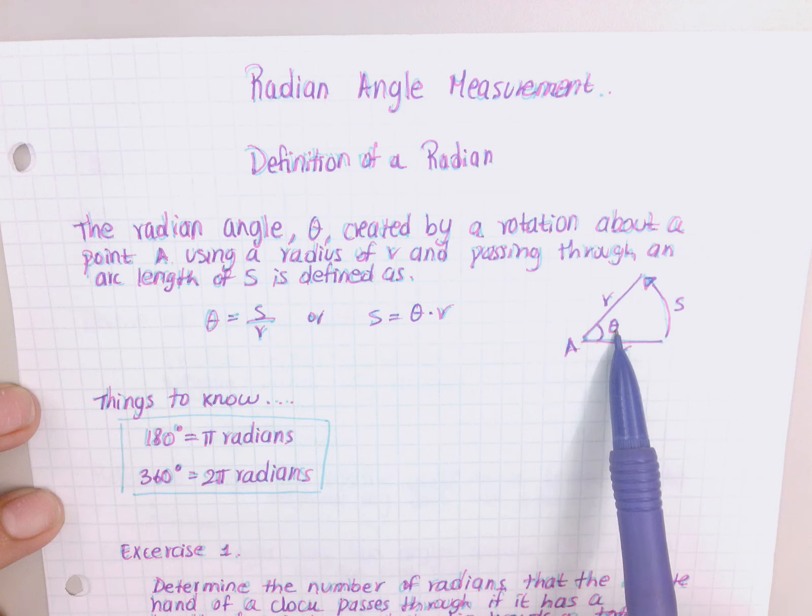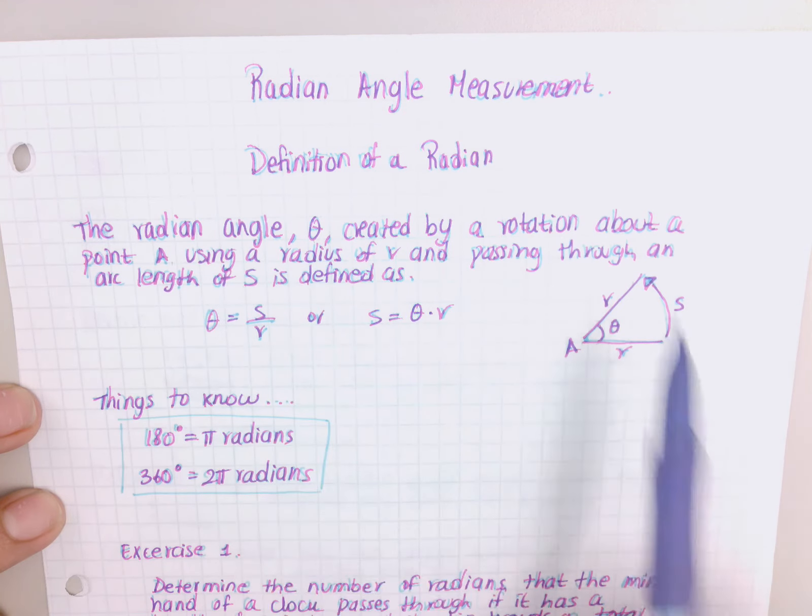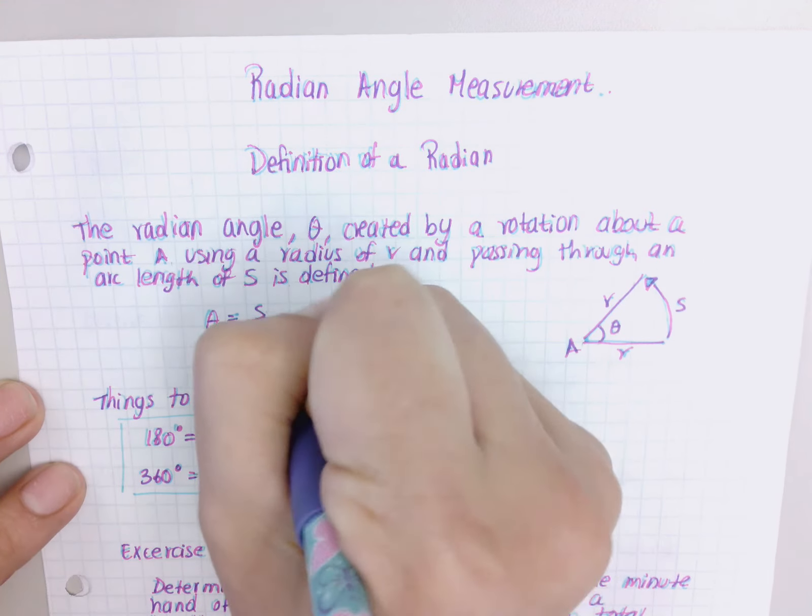So I drew the diagram here - you have that point A and it's this angle that's being created there, theta, using a radius of r and passing through an arc length of s. This is my arc length.